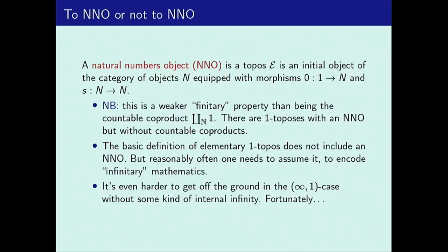What is the defining property of the natural numbers? They have zero and a successor map, and they're freely generated by zero and successor — they're an initial object in the category of objects equipped with such morphisms. The initial maps out express that we can define functions by recursion on the natural numbers uniquely. This is a finitary property of an object. If you have a category that has a countable coproduct of copies of the terminal object, then that countable coproduct is a natural numbers object in this sense, but the converse is not true — being a natural numbers object is a finitary elementary condition that doesn't necessarily imply it's externally a coproduct.